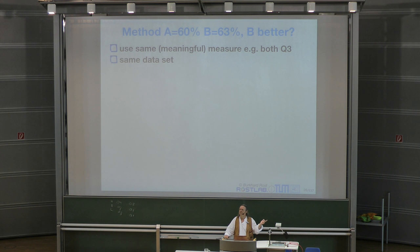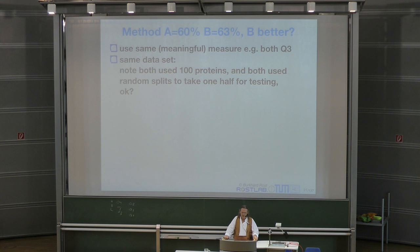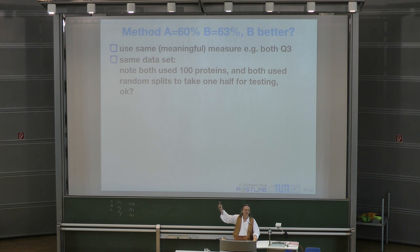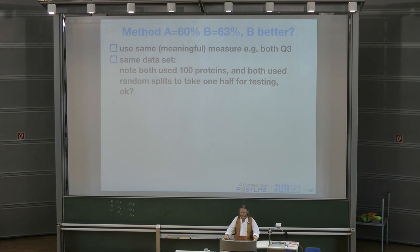There's a lot of complexity involved — it's not easy to redo that in your same environment. But assume that in both cases they did in fact use the same data set, and say both used the same 100 proteins to assess and come up with the numbers 60 and 63, and both used random splits with half as the testing set. Now, can we say they differ?